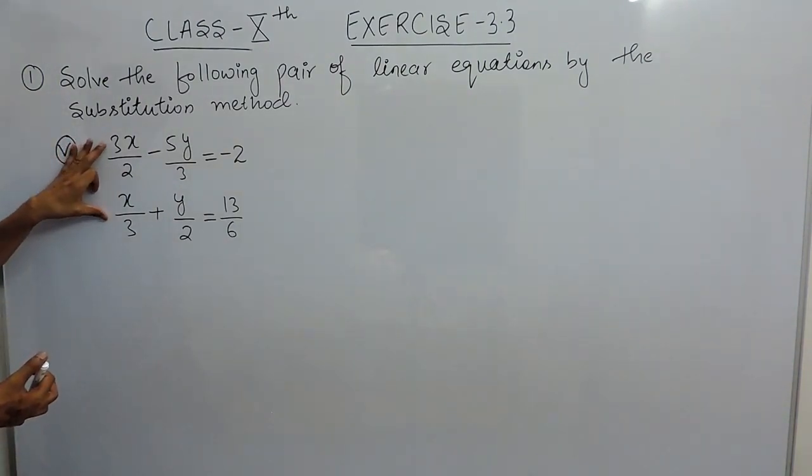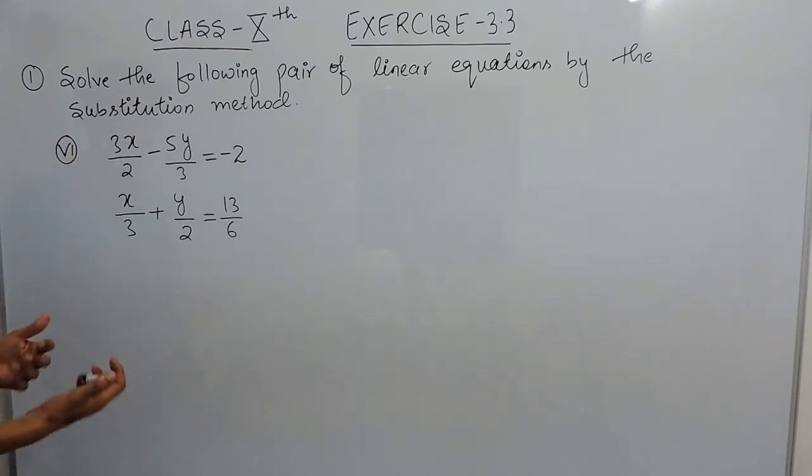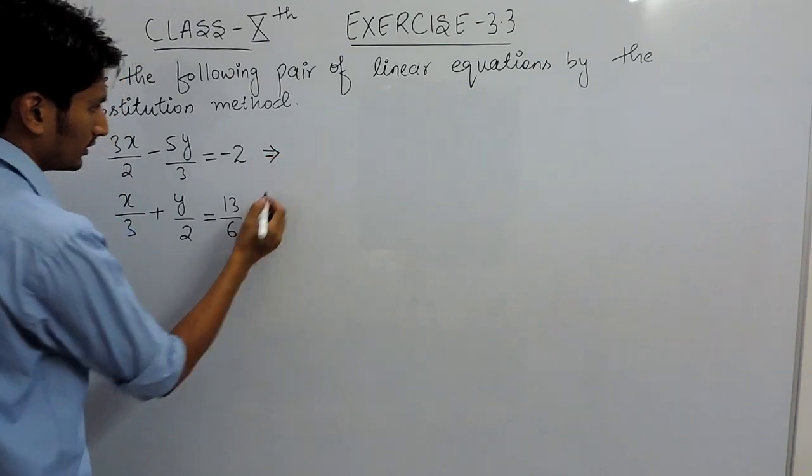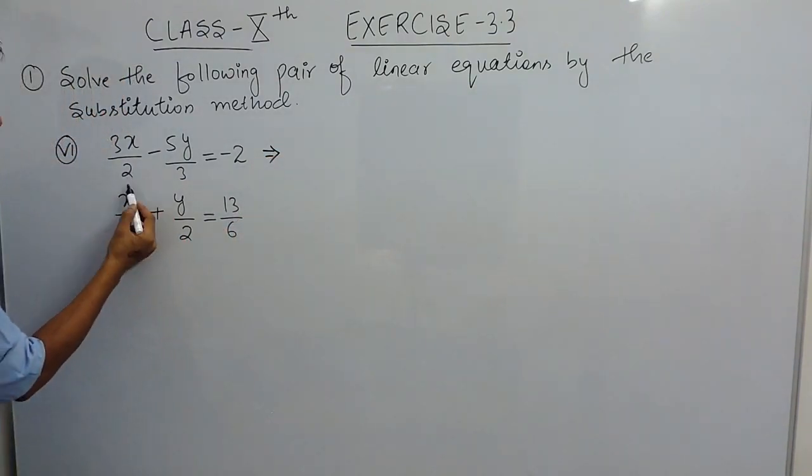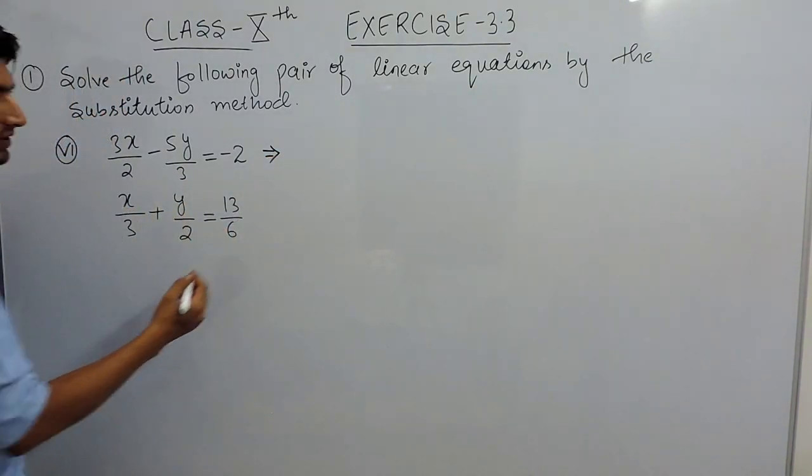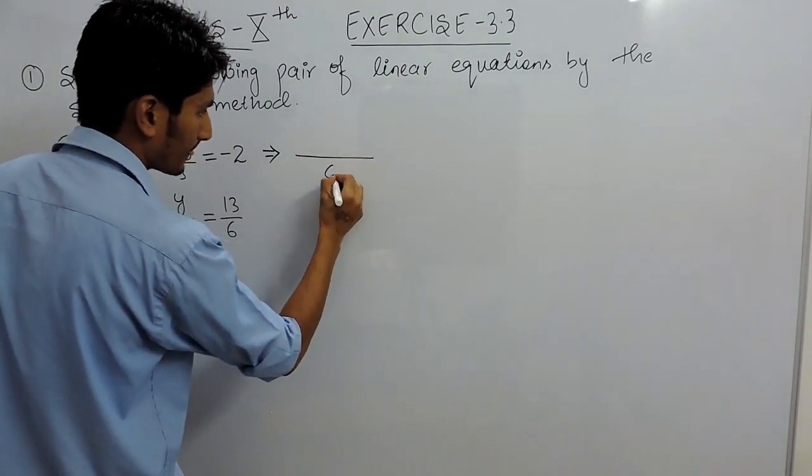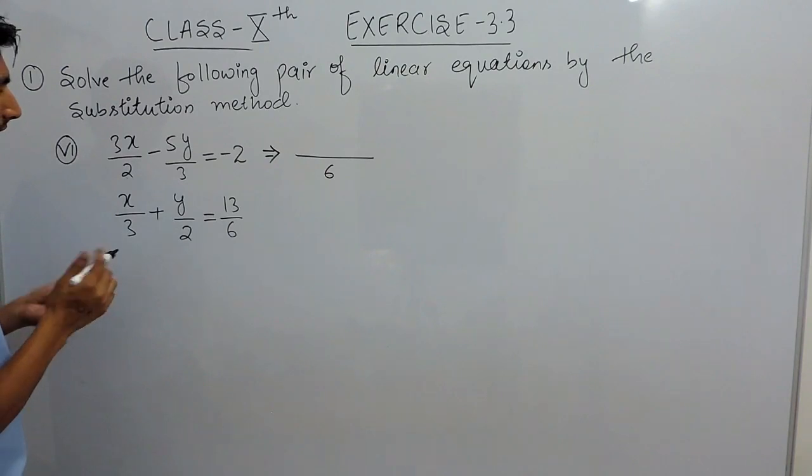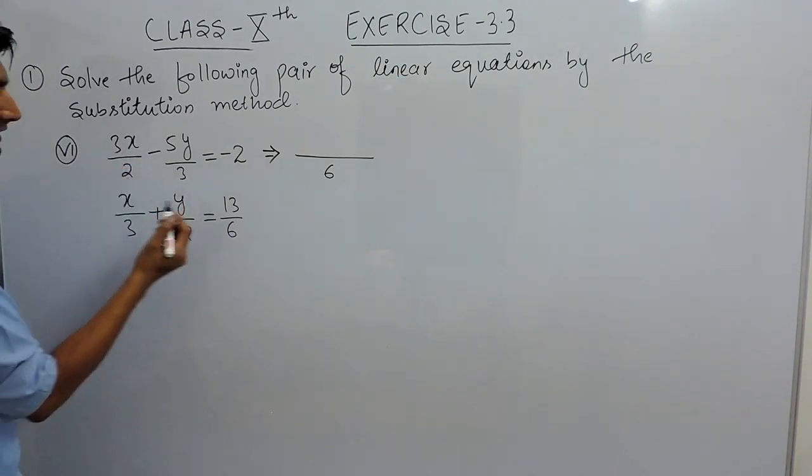First of all these are fractions, so convert them into simple linear equations. For that we have to take LCM, and we know that the LCM of 2 and 3 is 6. Now 6 divided by 2 is 3, and you can simply multiply 3 with 3.